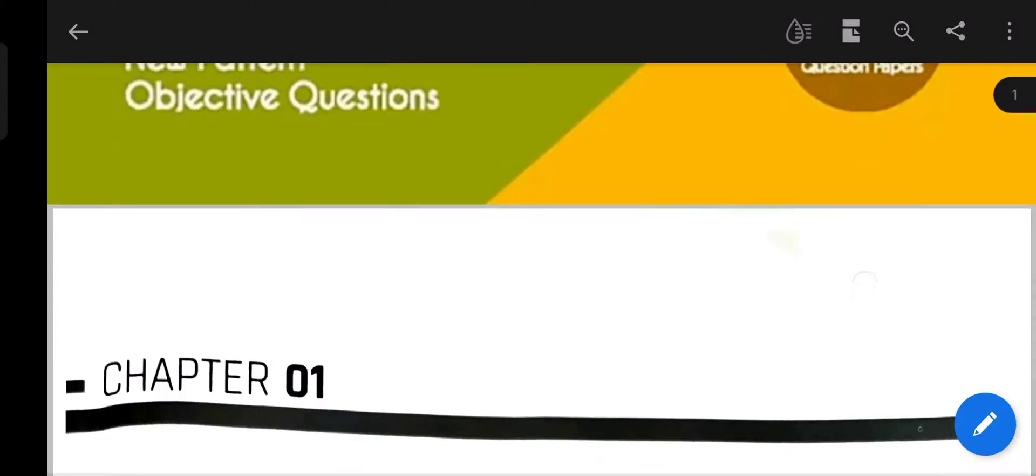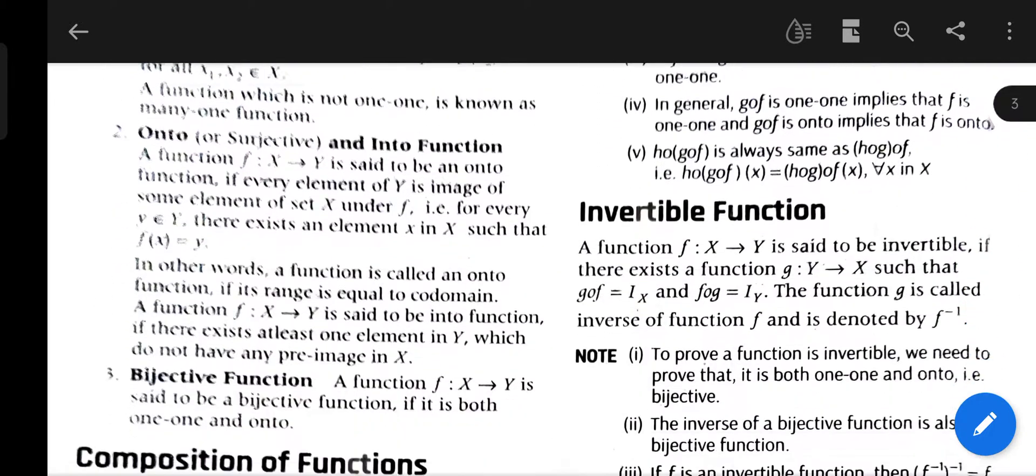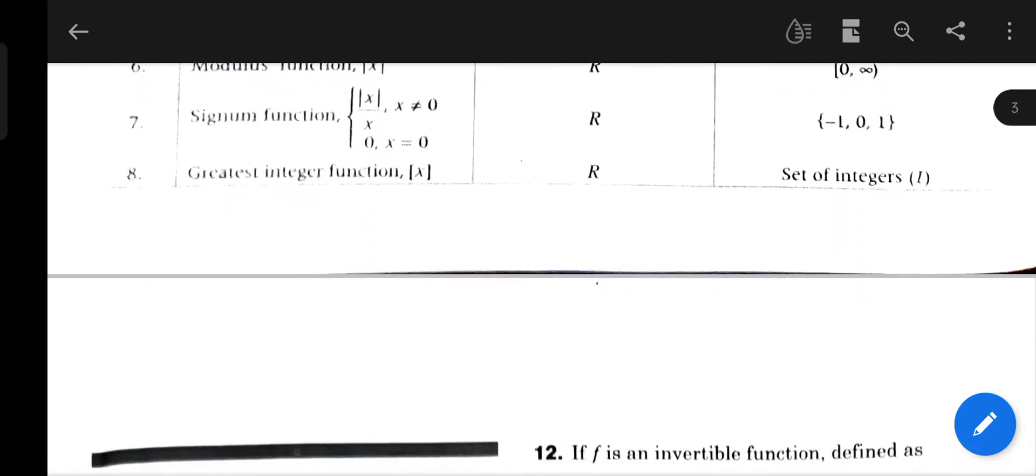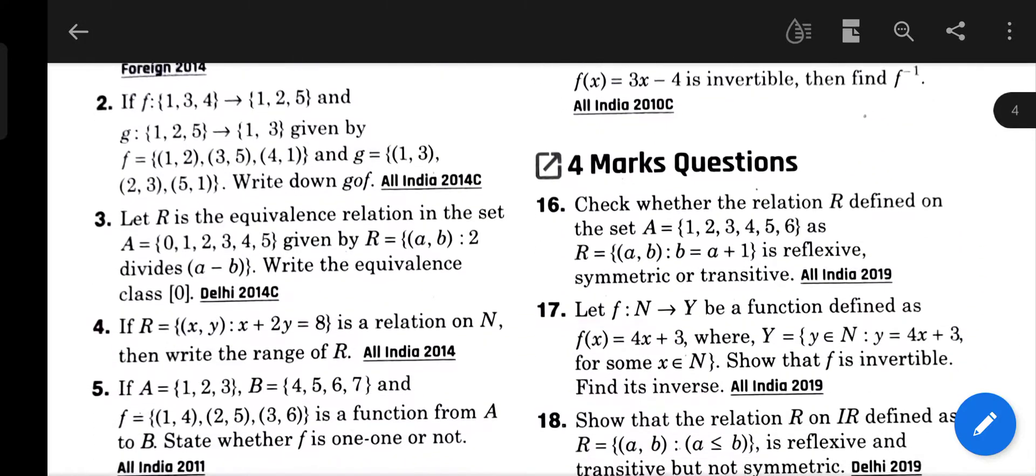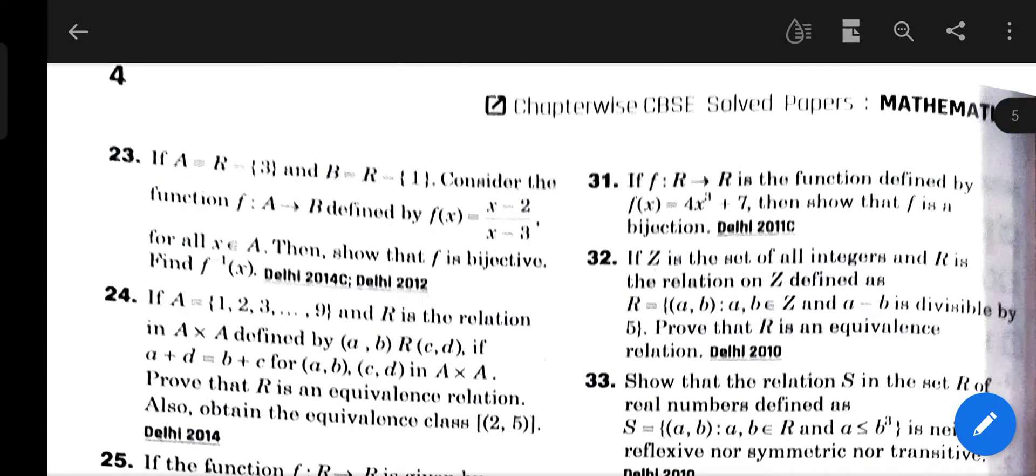So hello everyone, this is the scanned copy of Arihant CBSE chapter-wise solved papers from 2010 to 2020 for mathematics. In this PDF, you will be getting the chapters on relations and functions, as well as inverse trigonometric functions.